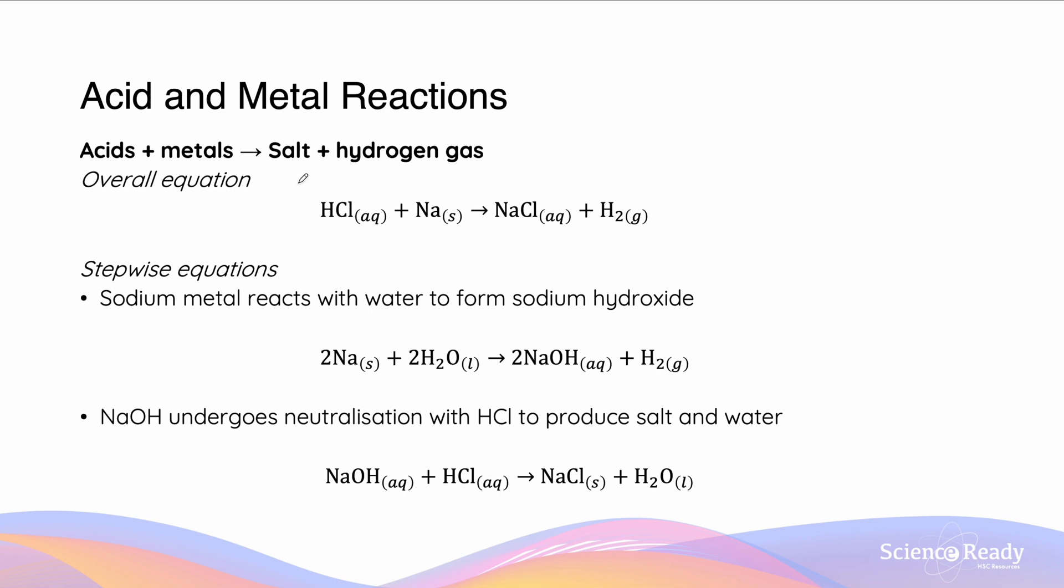Acid and metal has the general equation: acid plus metal gives us salt and hydrogen gas. The overall equation in this example for the reaction between hydrochloric acid and sodium metal is we get the formation of sodium chloride, salt, and hydrogen gas. Here's our salt, here's our hydrogen gas.